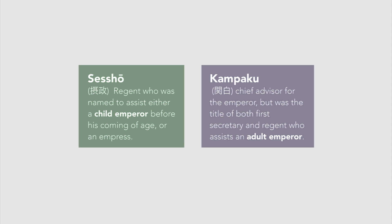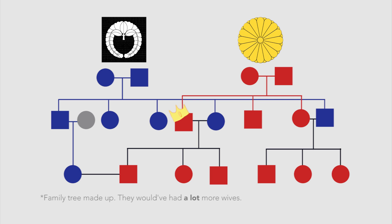In 858, the Fujiwara established a new form of government, where they appointed themselves as regents and civil dictators. Through these roles, they ruled in the name of the emperor. By this time, they had intermarried with the Yamato so extensively that the head of the Fujiwara clan was usually the grandfather, uncle, or father-in-law of the emperor. When a Fujiwara consort of the emperor produced an heir apparent, the emperor was encouraged to abdicate, and his Fujiwara father-in-law was named Sesho for the new emperor, and then Kanpaku when the young ruler came of age. Needless to say, they had a lot of control over the government.